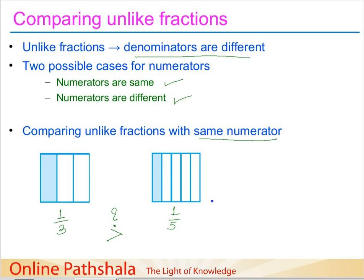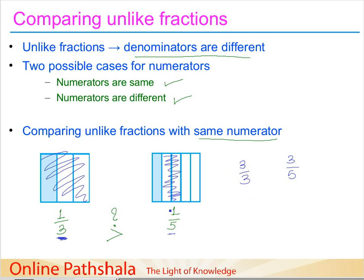To generalize this result: in unlike fractions with the same numerator, the fraction with the smaller denominator is going to be greater than the one with a higher denominator. This holds even if the numerator is not 1 — the only requirement is that the numerators are the same. For example, consider 3/3 versus 3/5. When we take 3/3 it represents the entire square, while 3/5 represents only 3 parts out of 5.